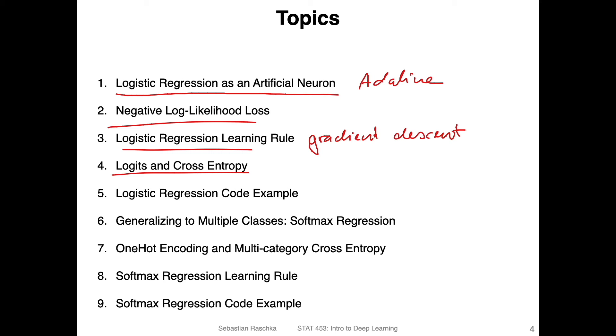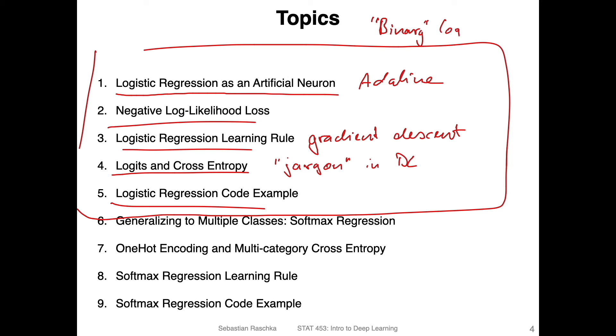And then here, there's just some terminology called the logits and cross entropy. These are some terms you will find in deep learning concepts. So logits and cross entropy are jargon in deep learning. So we will just briefly see what these terms mean. And then I will show you a logistic regression code example. So all this stuff here is about the regular or let's call it binary logistic regression. So that's the original logistic regression for binary classification only, for two classes.